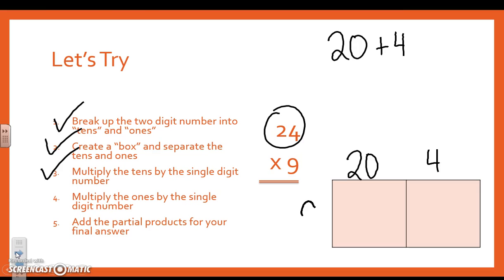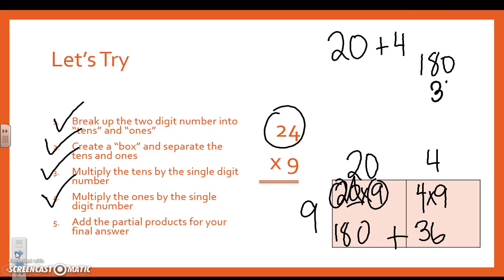Now I'm going to multiply the tens by the single-digit number. So I have 20 times 9. Circle and triangle. 2 times 9 is 18. One more 0. Bring the 4 down. Bring the 9 across. 4 times 9 is 36. I did step 4. Step 5 is to add your partial products. So I have 180 plus 36. 6 and 0 is 6. 8 and 3 is 11. 1 and 1 is 2. So 216 is the product of 24 times 9.